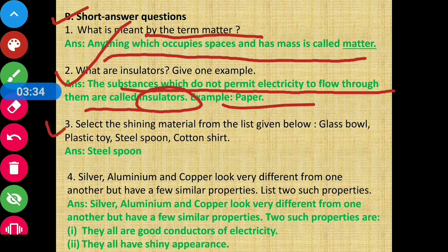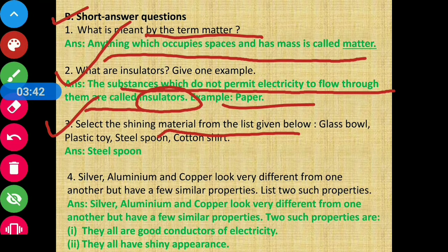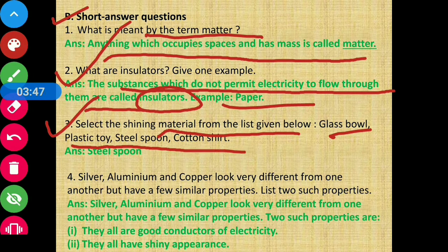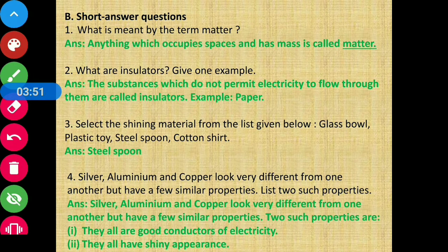Question number 3: Select the shining material from the list below — glass ball, plastic toy, steel spoon, and cotton shirt. The answer is steel spoon.